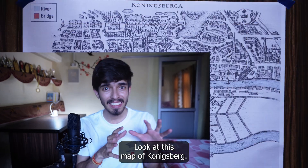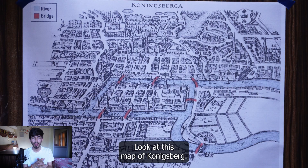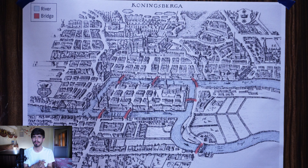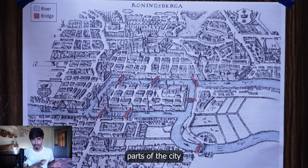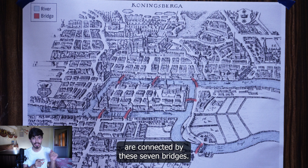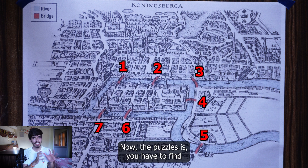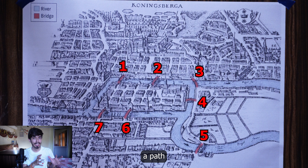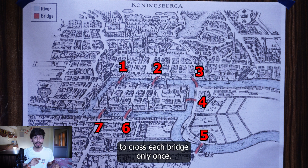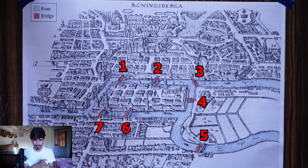Here is a puzzle for you. Look at this map of Königsberg. As you can see, different parts of the city are connected by these 7 bridges. The puzzle is: you have to find a path which will allow you to cross each bridge only once.